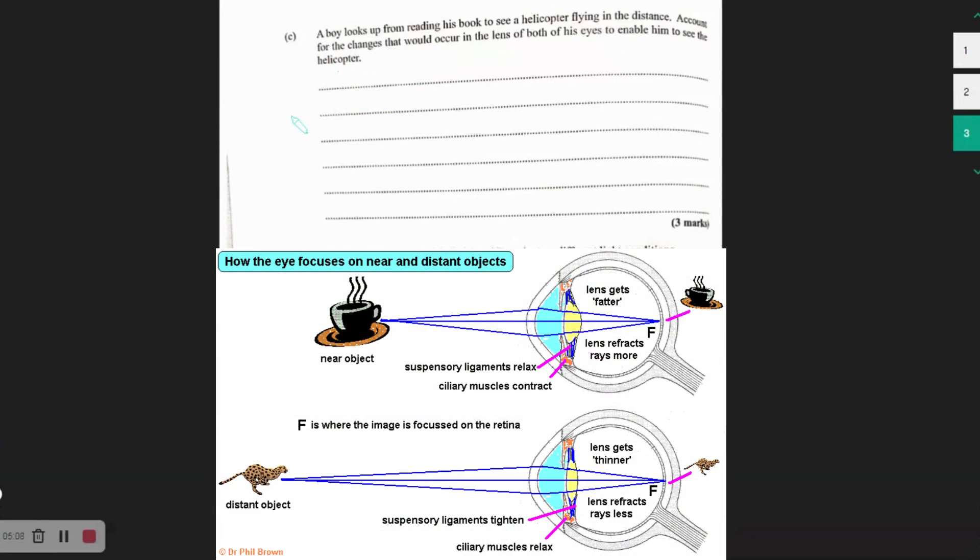So what is changing here or what is going to respond to this is the ciliary muscles, the suspensory ligaments, and by their actions, it is going to change the shape of the lens. So remember when we are looking at something that is close, what is the state of these things that I just mentioned?